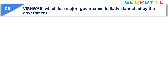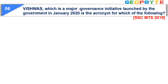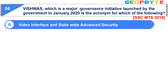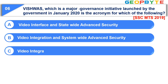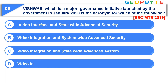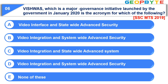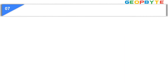Question number six: A major governance initiative launched by the government in January 2020 — the acronym VIKAS stands for which of the following? Option A: Video Interface and State-Wide Advanced Security; option B: Video Integration and System-Wide Advanced Security; option C: Video Integration and State-Wide Advanced System; option D: Video Integration and System-Wide Advanced Security; option E: none of these. The correct answer is option C: Video Integration and State-Wide Advanced System.